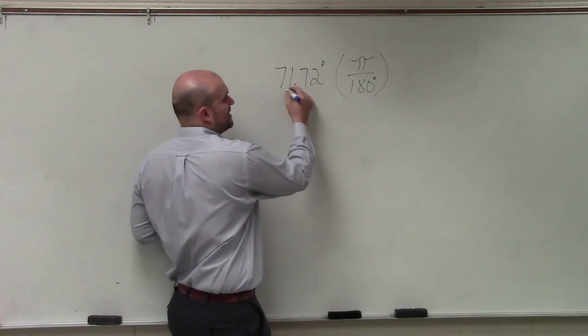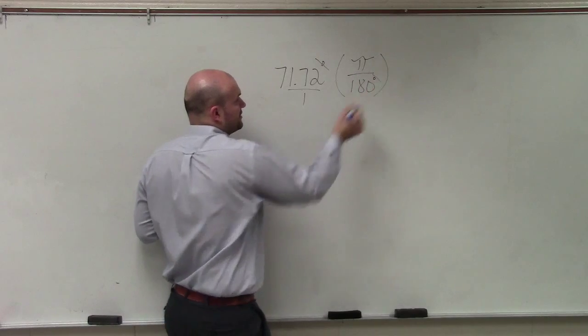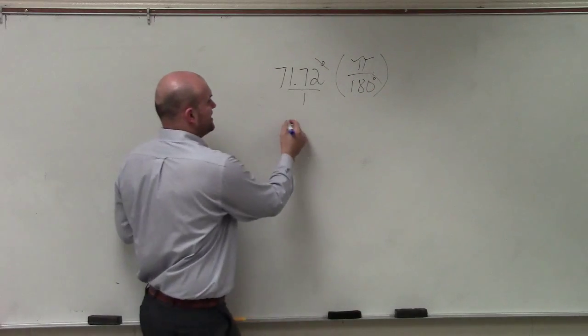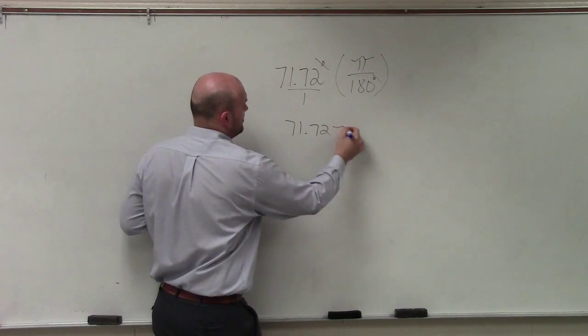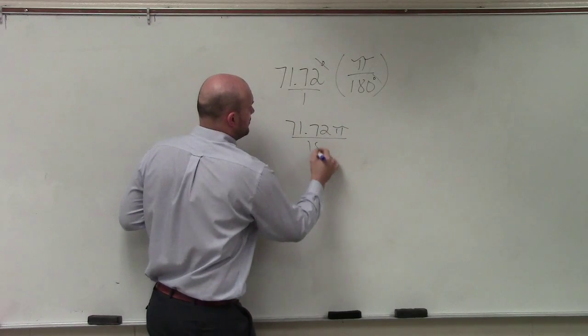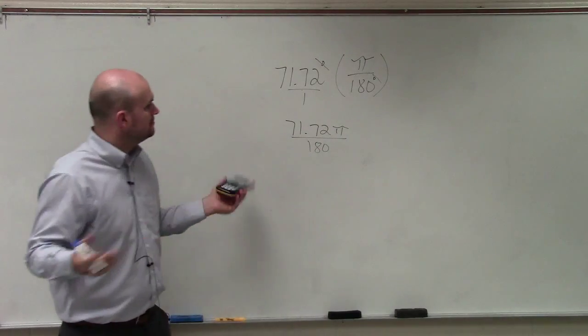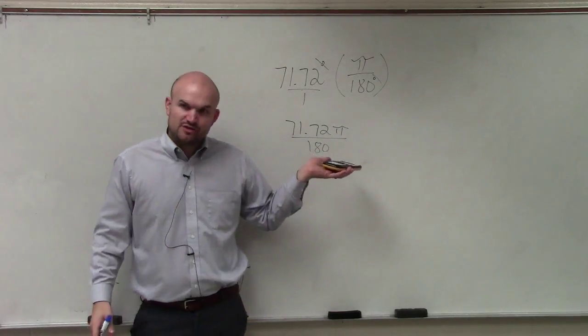However, we know that by using the division property, the degrees cancel out. Therefore, I basically have 71.72π over 180. So technically, that is a measure of an angle in radians.